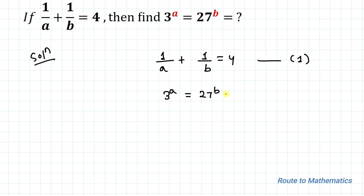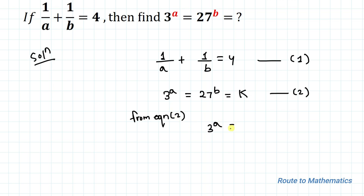Now let's assume this all equals to a value k. Let's take it as equation 2. So from equation 2 we can write 3 to the power a equals to k.